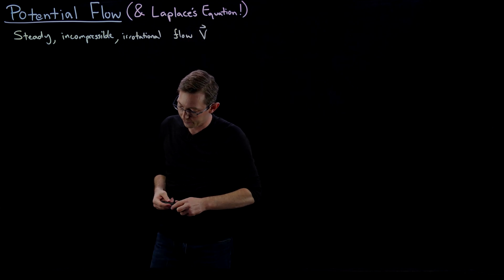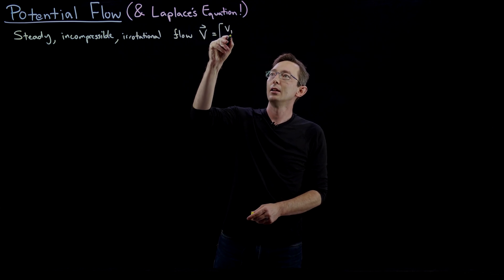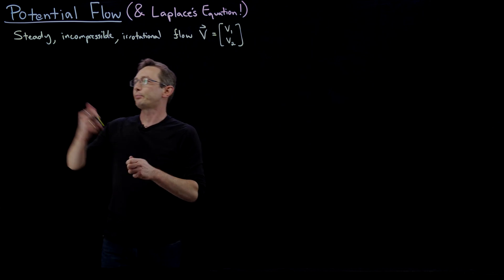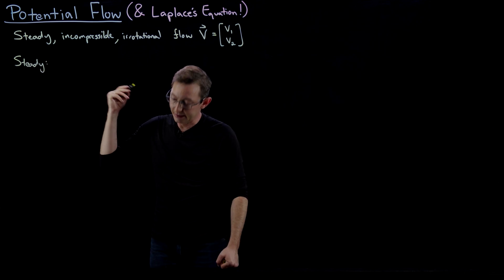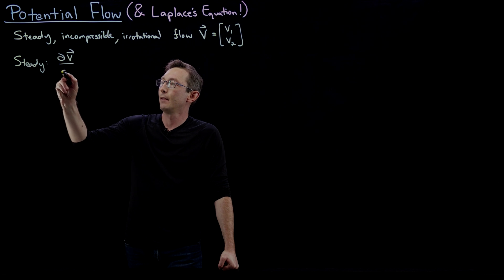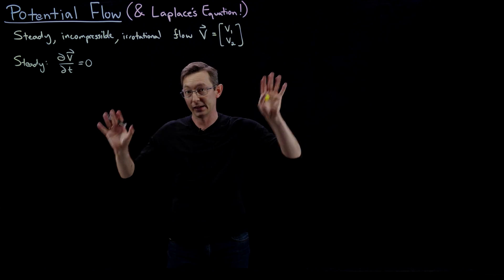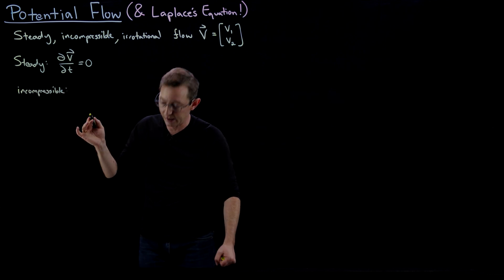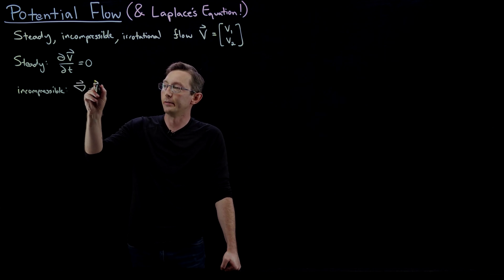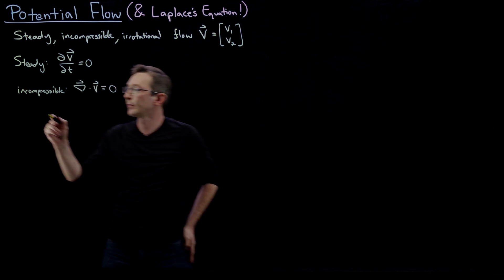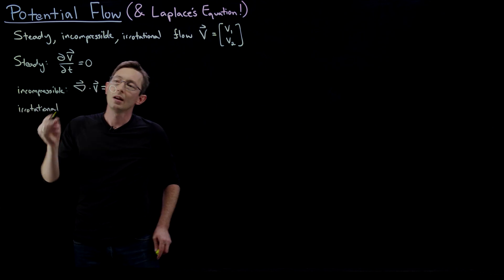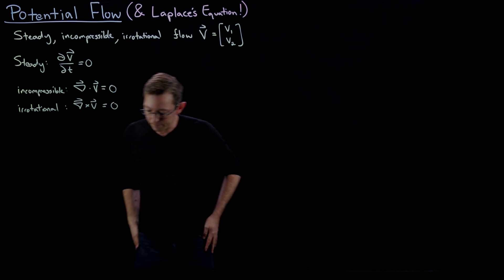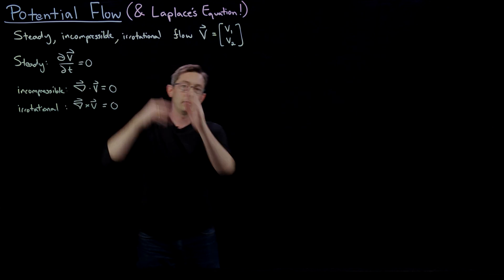We have a two-dimensional vector field v = (v₁, v₂), which are functions of x and y. Mathematically, steady means ∂v/∂t = 0 — the field is not changing in time. Incompressible means the divergence of v equals zero — it's not sourcing or sinking. And irrotational means the curl of the vector field equals zero.